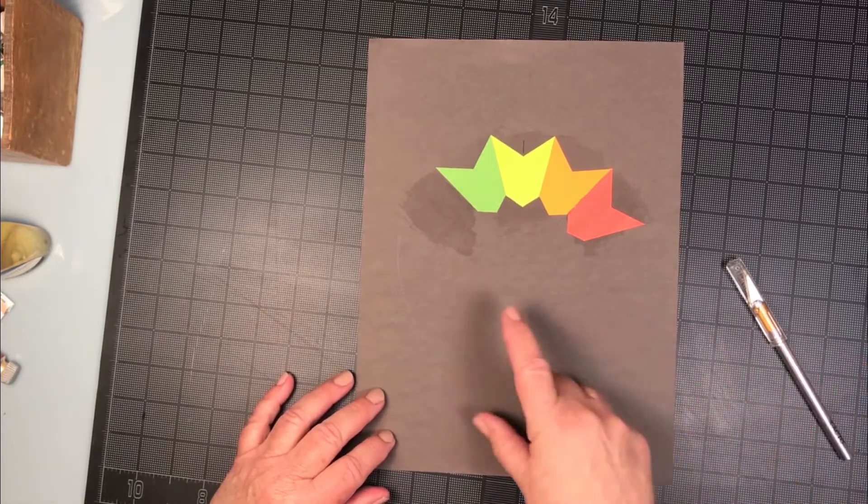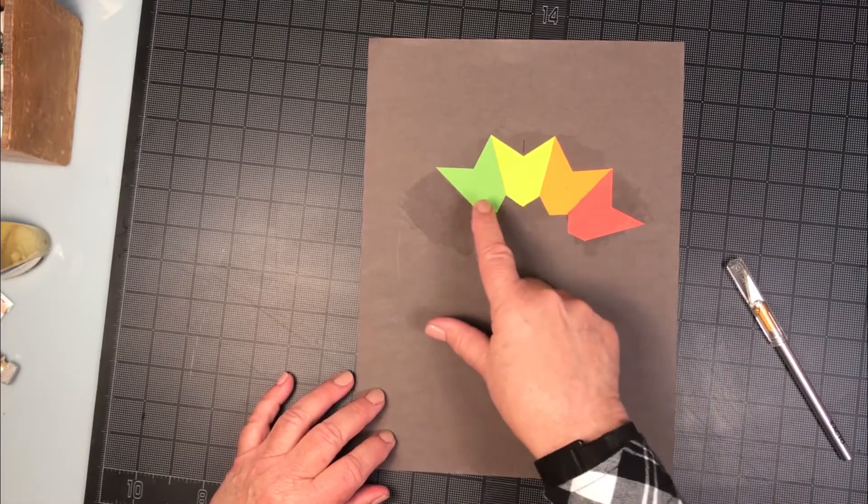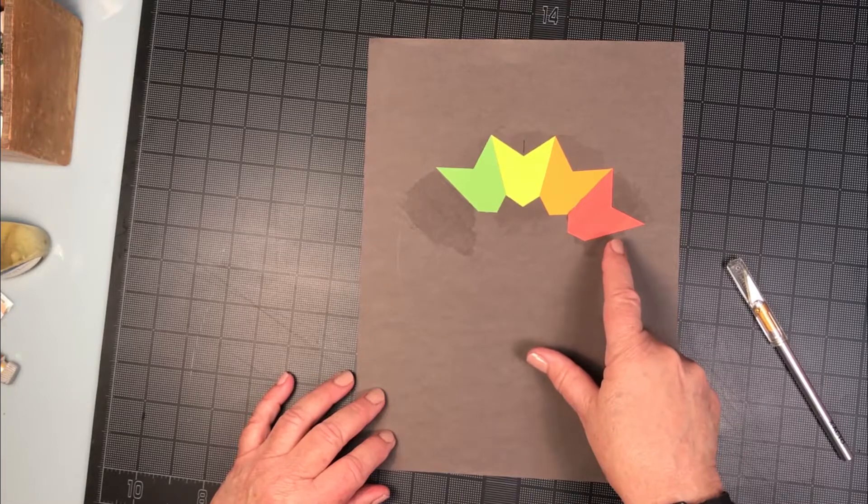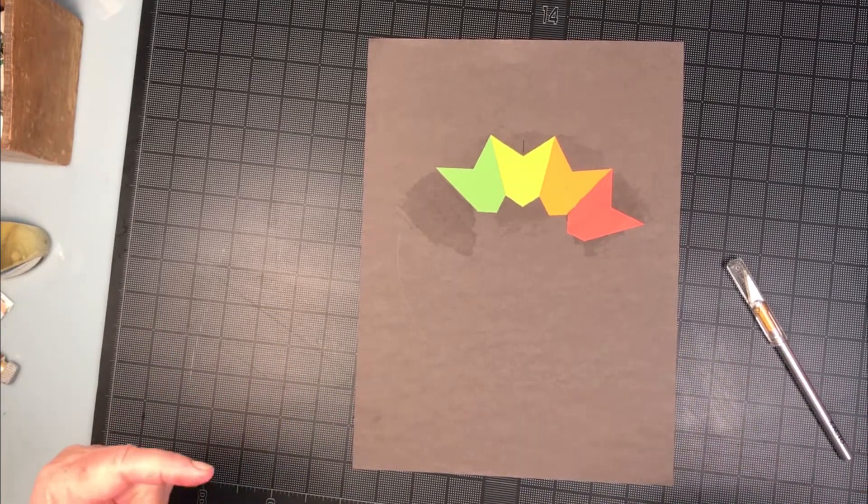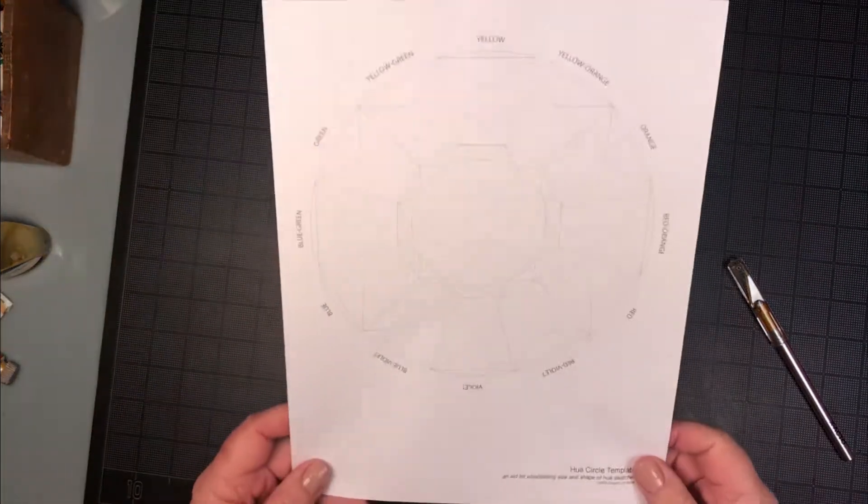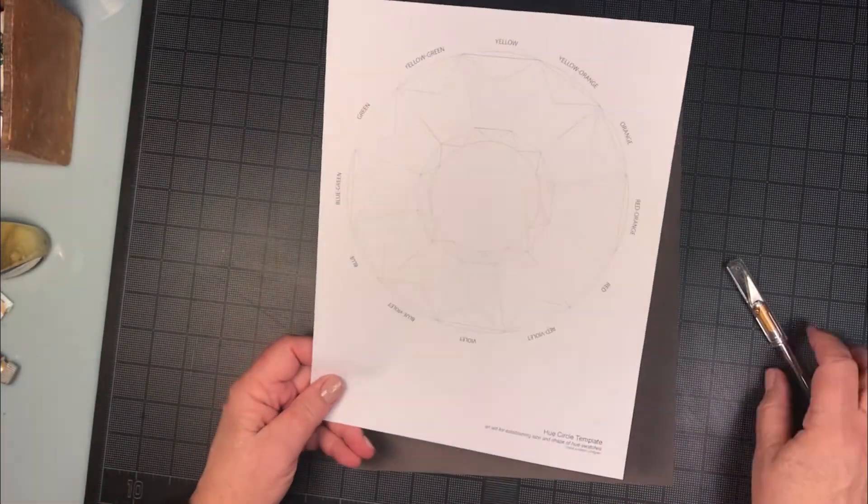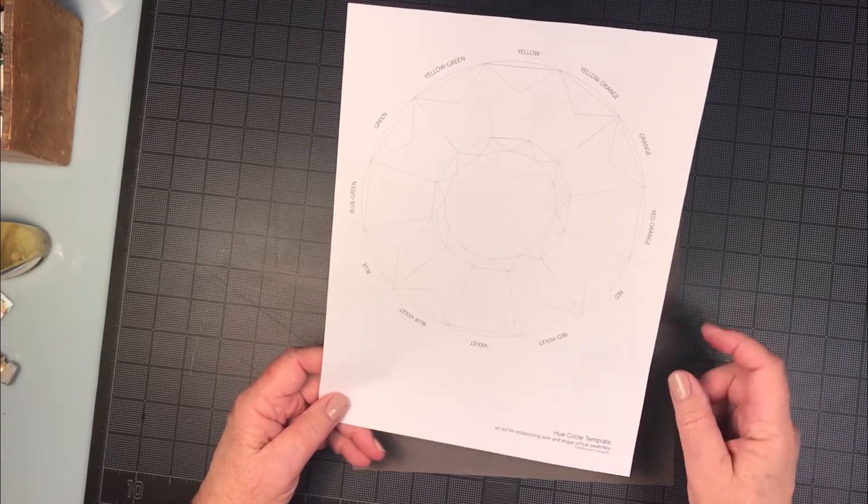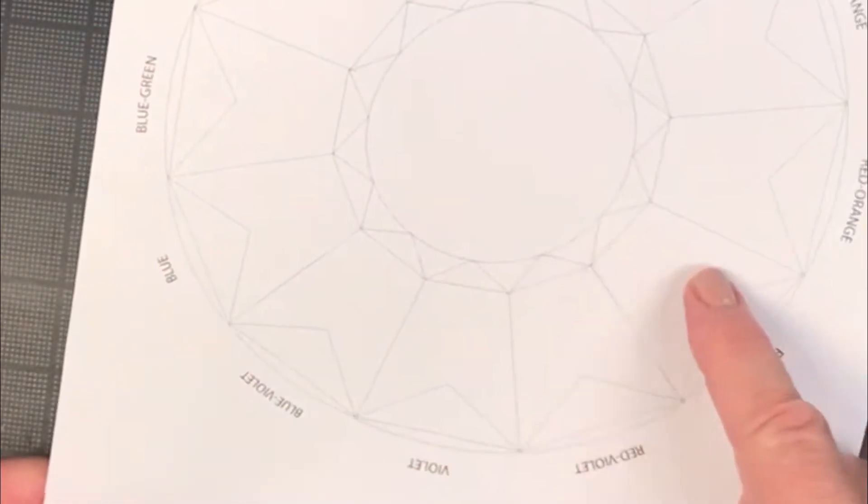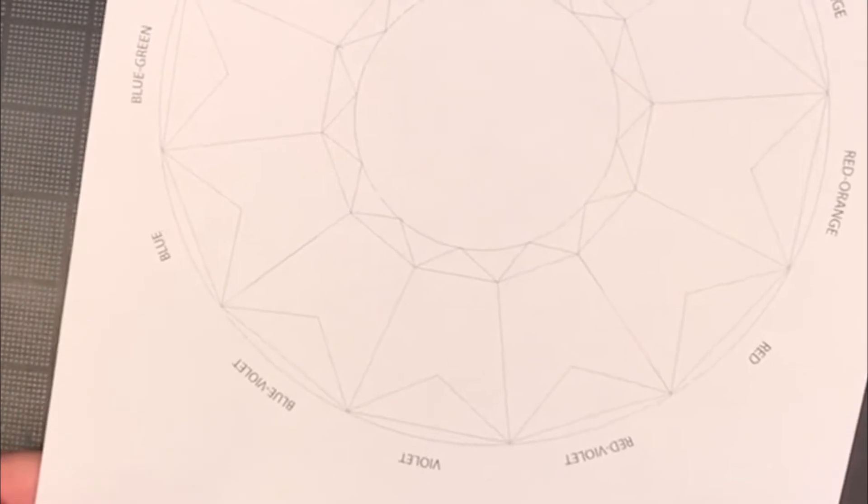Each individual swatch is going to be cut to a particular shape, and you determine that shape based on the hue circle template. So the hue circle template is provided for you. It's linked in the assignment. The lines are very thin to allow for more accurate cutting.